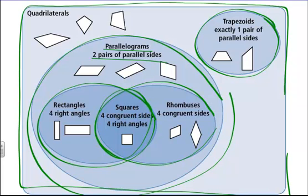Parallelograms have two pairs of parallel sides. Rectangles, squares, and rhombuses are all also parallelograms — and all are quadrilaterals. Squares have four congruent sides and are also rectangles, rhombuses, parallelograms, and quadrilaterals. Rectangles have four right angles but are not necessarily squares. Rhombuses have four congruent sides but are not necessarily squares because they don't need 90-degree angles. Trapezoids have only one pair of parallel sides, so they are not parallelograms, rectangles, squares, or rhombuses.